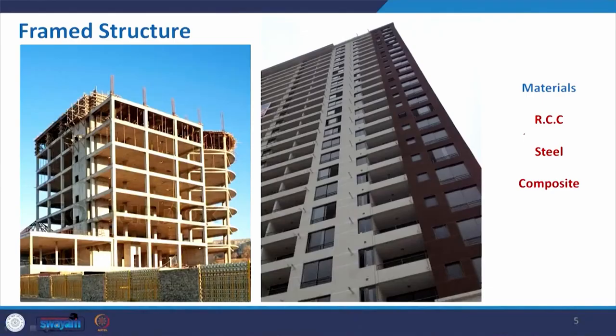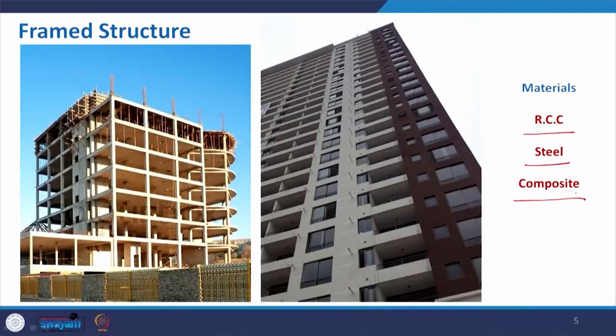As far as the material is concerned, we can use RCC — reinforced cement concrete — to make this frame structure. We can use the steel frame and join them together. Nowadays it is also very common to have the frame structure with steel and glass or some other lightweight material for making the partitions and openings, and sometimes we can also go for some composite or advanced material to make this frame.